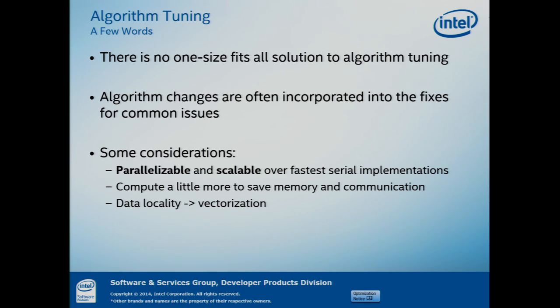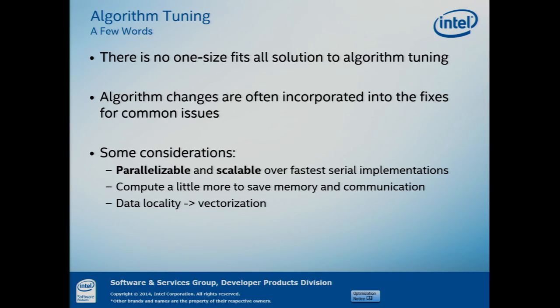A lot of the changes in algorithm used to fix performance issues are incorporated into fixes for common issues. When I start showing you how to detect DRAM-bound portions of your code, the fix might be to change your algorithm. Or when I show you how you're not getting parallelism on your cores, the fix is going to be to change your algorithm. But there are also cases where the fix is just changing the way data is laid out — use column-major arrays instead of row-major, that sort of thing. A lot of fixes involve algorithm changes, and you'll need someone with expertise in the algorithm to implement those changes.